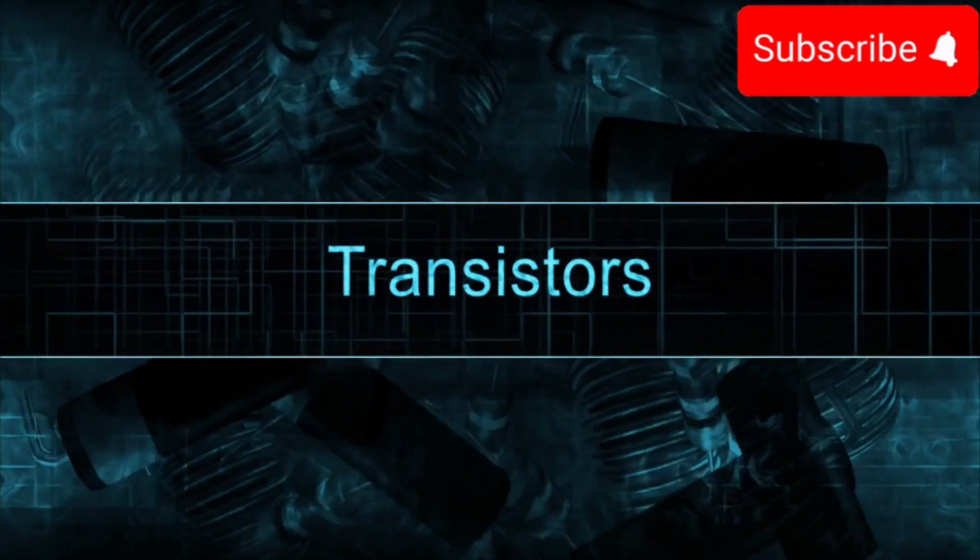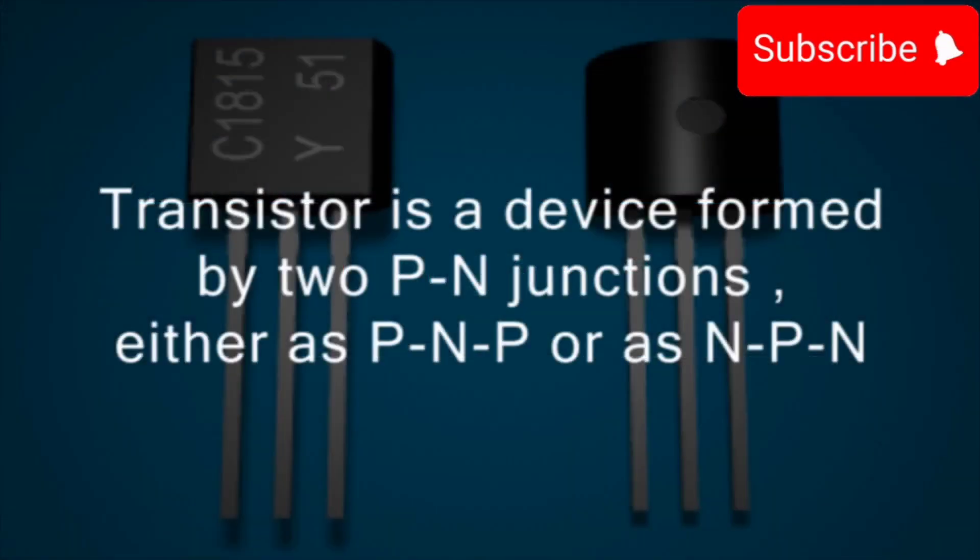Transistors. A transistor is a device formed by two P-N junctions, either as PNP or NPN.